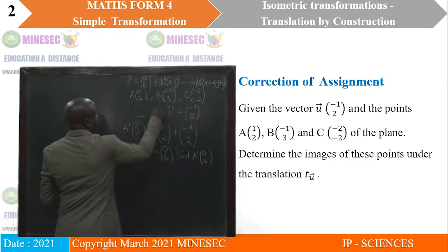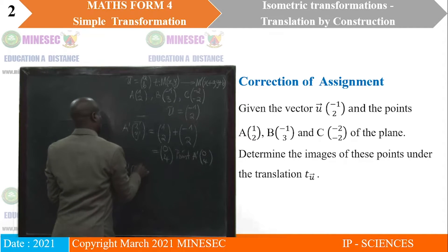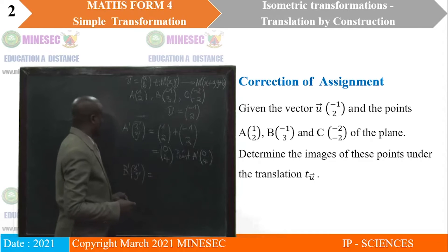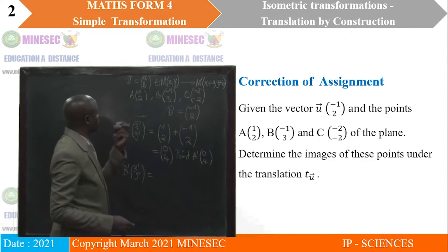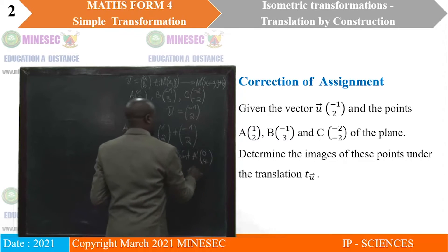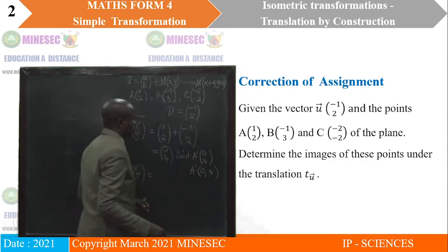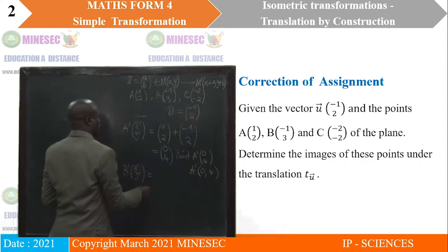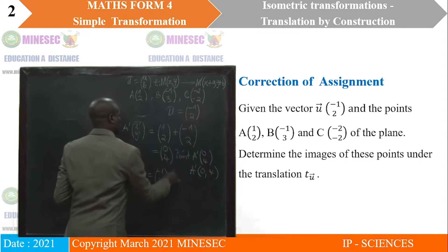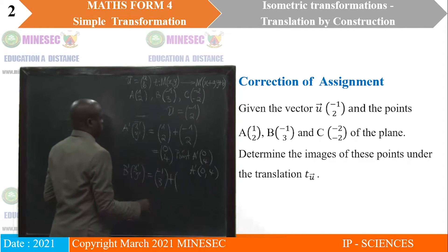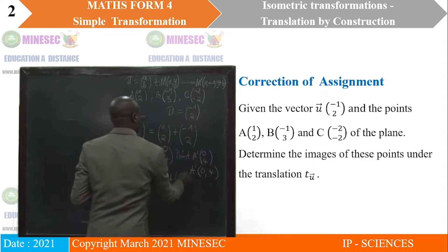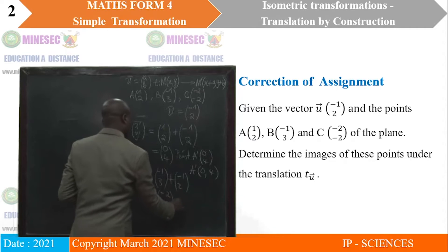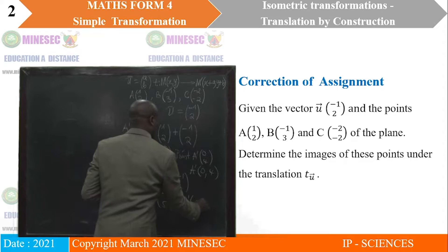The next one is B. B prime is obtained by taking B(-1, 3) plus the translation vector (-1, 2), which gives us (-2, 5). So the point B prime has coordinates (-2, 5).